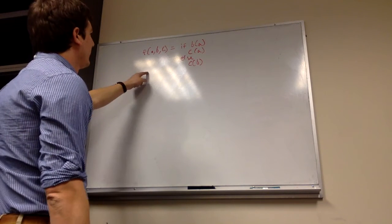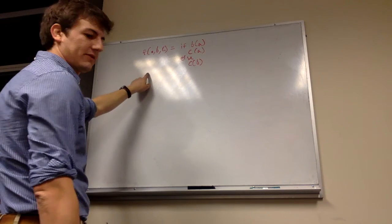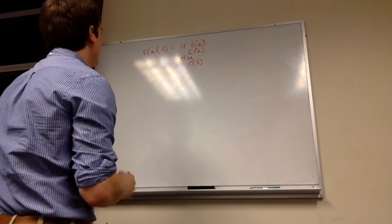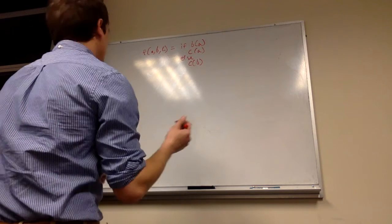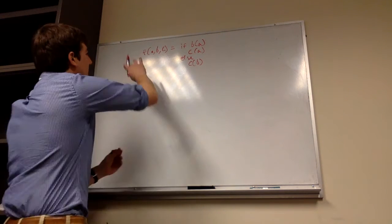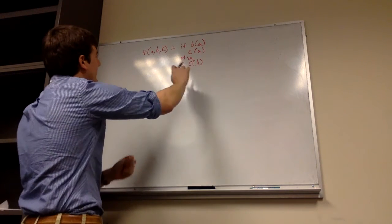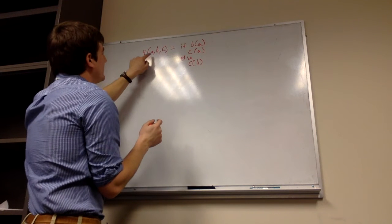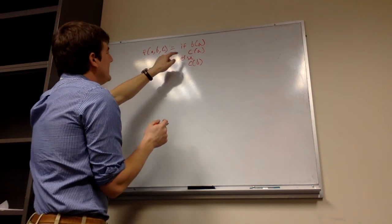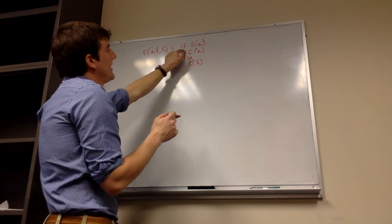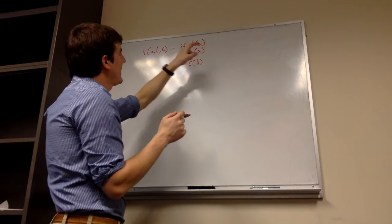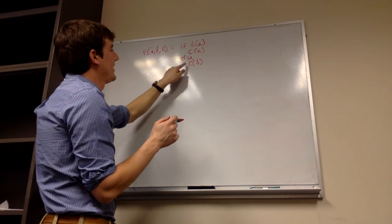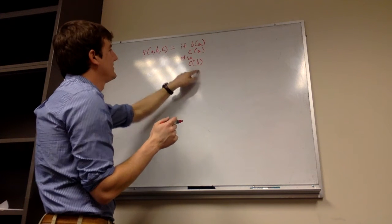In our type inference, we're going to go over homework question 3. We know we have a definition of a function f which takes in three parameters a, b, and c, and we say if b of a, then return c of a, otherwise return c of b.